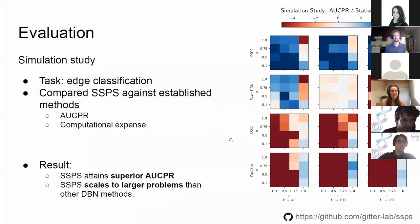We compared SSPS against established methods including another dynamic Bayesian network technique, a LASSO implementation, and a non-parametric hypothesis test called FunChiSquare. We compared their area under the precision-recall curve for edge classification and their computational expense. To make a long story short, SSPS attains superior area under the precision-recall curve — in the heat maps, blue is good and red is bad, and SSPS got a lot of blue.